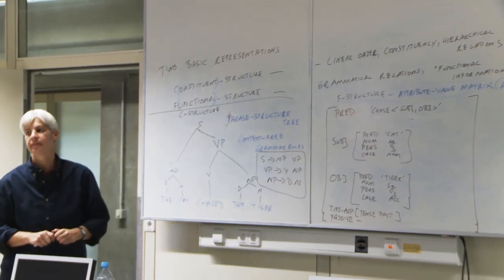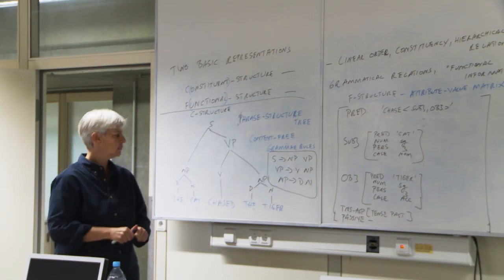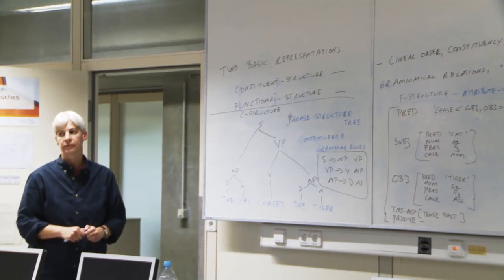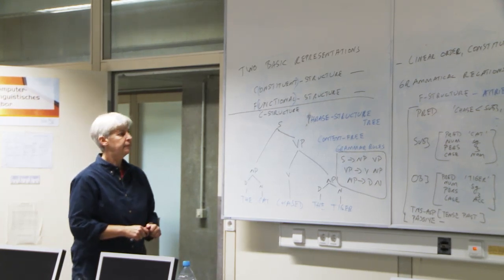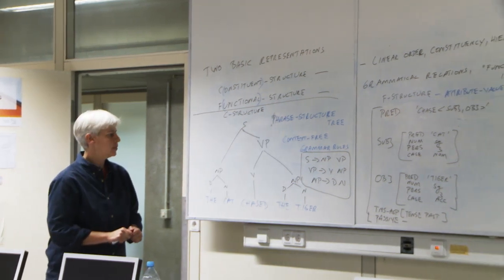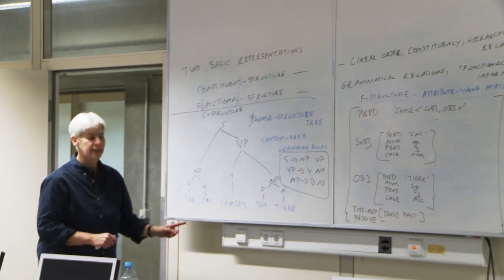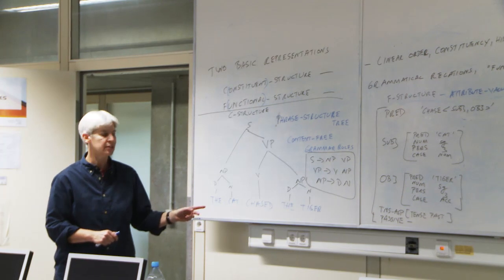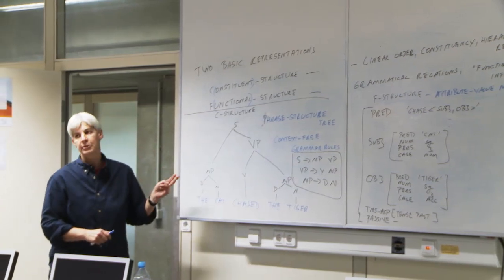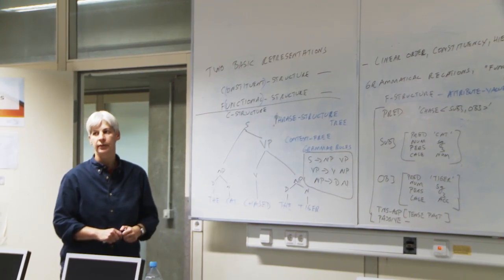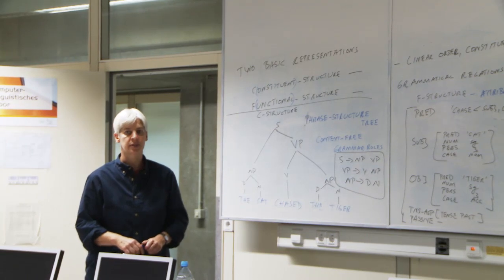A student asks: what happens with ambiguous sentences — do you always have to represent both? In English this sentence isn't ambiguous because the word order fixes subject and object. But in German, with the right noun phrases, it could be either the cat chased the tiger or the tiger chased the cat. In that case you get two representations — two trees and two F-structures. If you're doing it computationally, the grammar produces both.